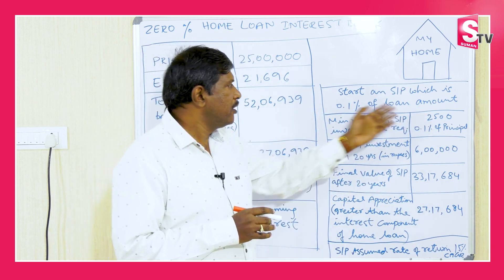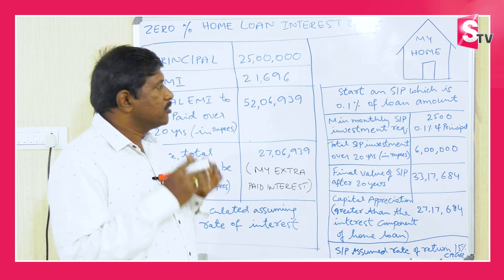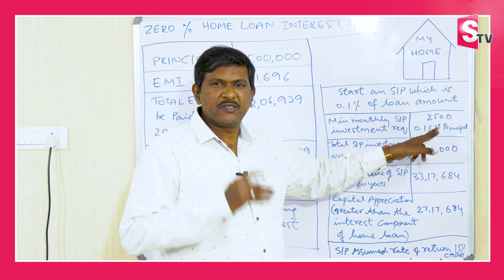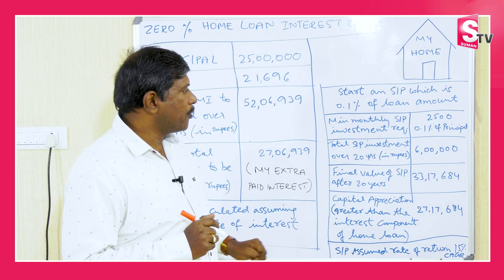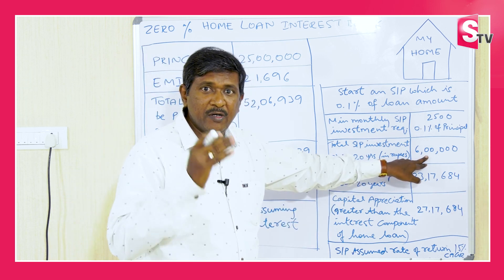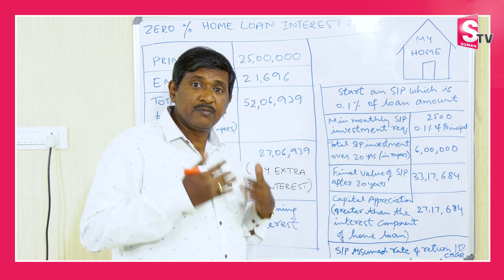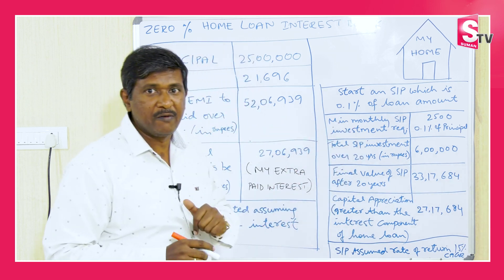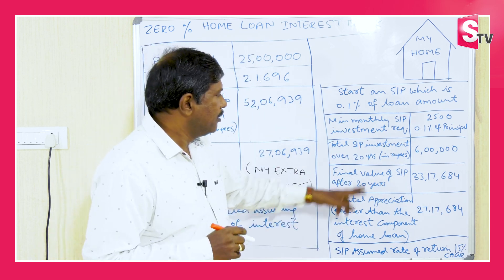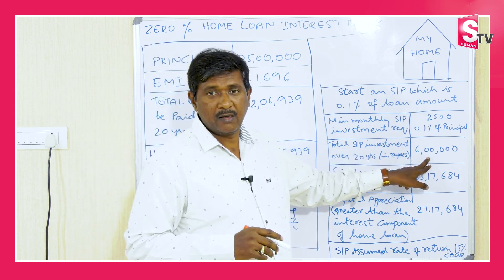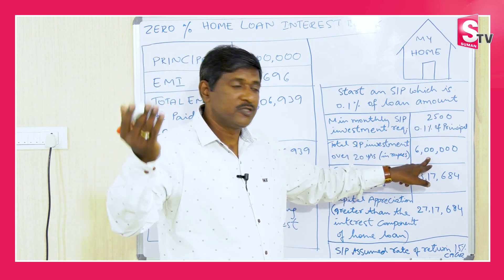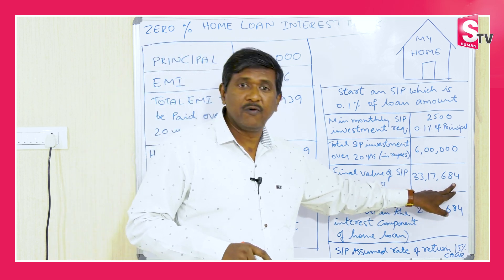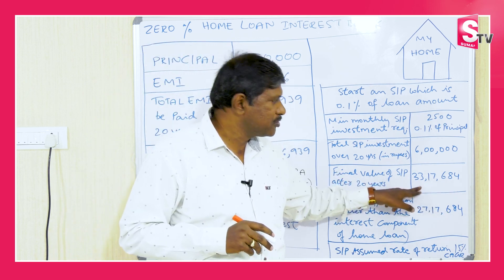So what I am doing is paying the EMI every month for 20 years, and on top of that, I invest an extra 2,500 per month for the same 20-year duration. What I am doing is investing 6 lakhs total in a mutual fund. There are different mutual funds and the concept varies. So investing 6 lakhs on a SIP basis, the final value of SIP after 20 years is 33,17,684.